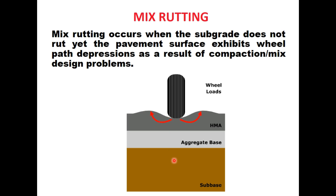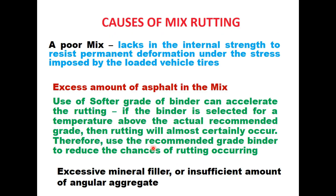Mixed rutting usually does not occur immediately, but as more vehicles drive on the road, the asphalt continues to get depressed under the tires and pushed out along the sides. There are several reasons for mixed rutting, but the most important is a poor mix. Excessive amount of asphalt in the mix or use of a softer grade of binder can accelerate rutting. If the binder is selected for a temperature above the actual recommended grade, rutting will almost certainly occur. Excessive mineral filler or insufficient angular aggregate in the mix can also result in rutting.